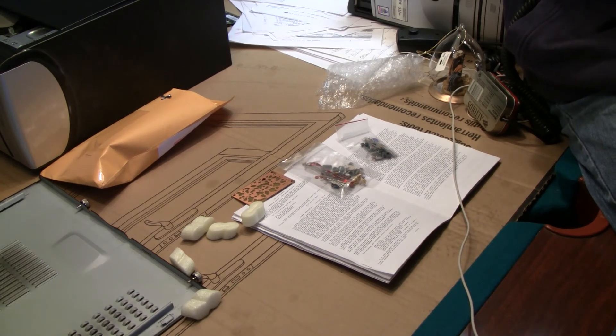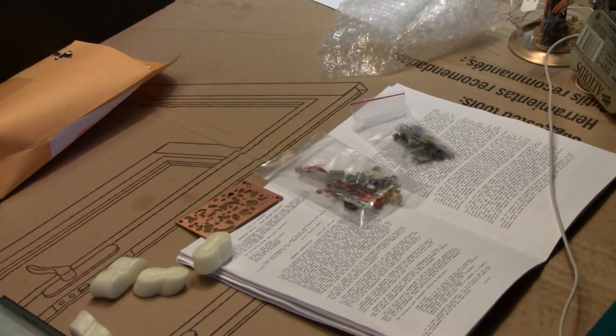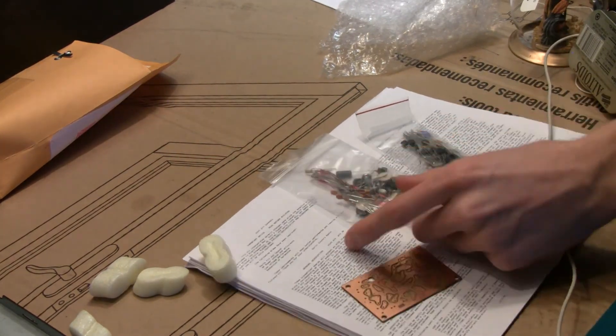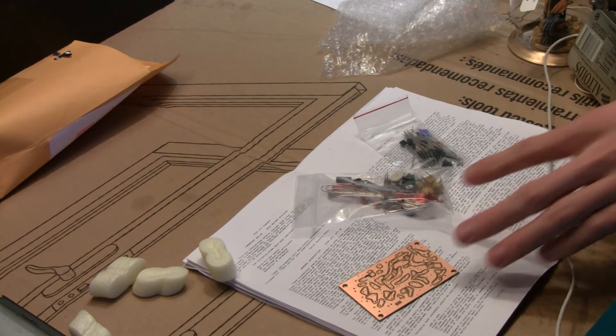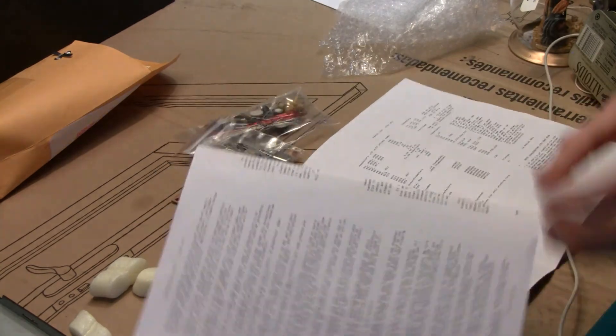But either way, it came with all kinds of resistors and crystals, and here's a printed circuit board here. Got all kinds of variable capacitors and all that, should be pretty interesting. It came with lots of information, different tips in the book here. Let's see, here's a schematic.